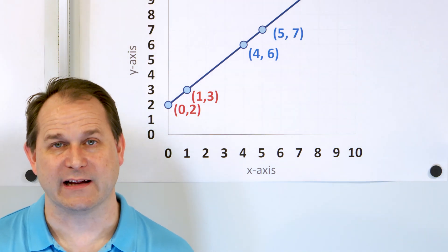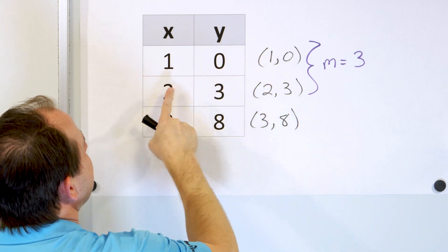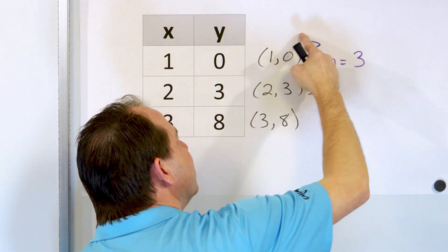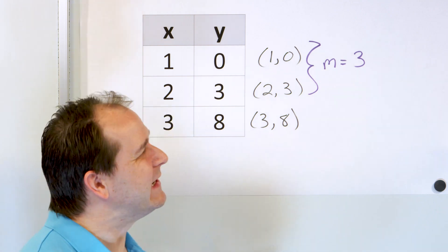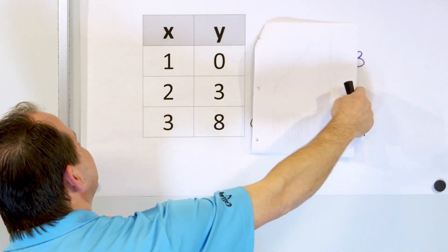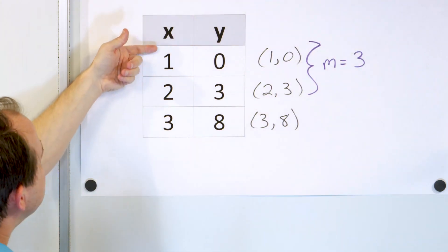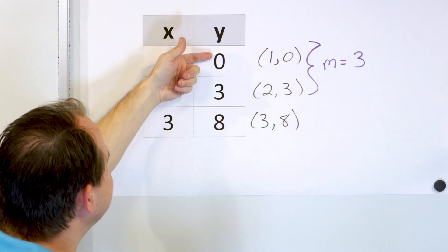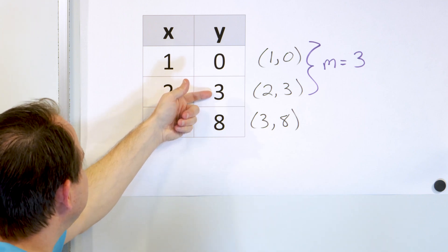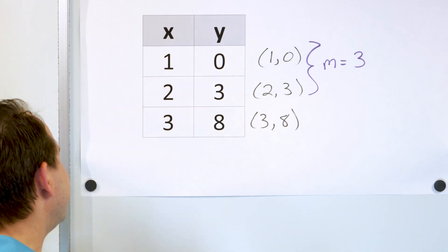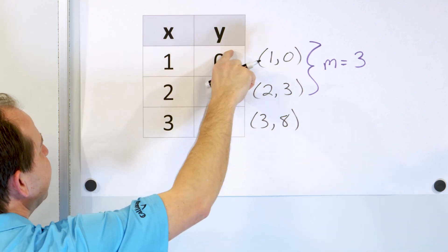Now let's work problem number two and see what happens when — I'll give you a little spoiler alert — it's not going to be a constant slope. Problem number two: here is our data. We have only three data points: 1 comma 0, 2 comma 3, 3 comma 8. I've already calculated the slope between some of these points. But still, we have data here — this could be time in hours and temperature in a room: 0 degrees at 1 hour, 3 degrees at 2 hours, 8 degrees at 3 hours. Let's calculate the slope between the first two points and see what it is.